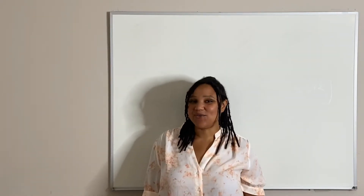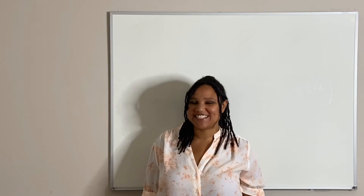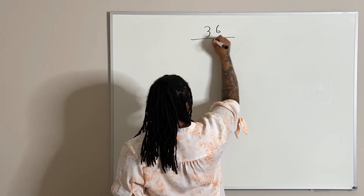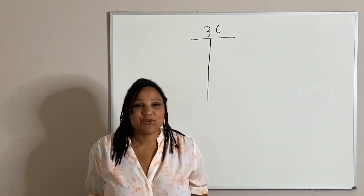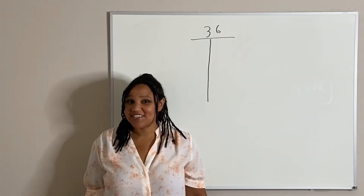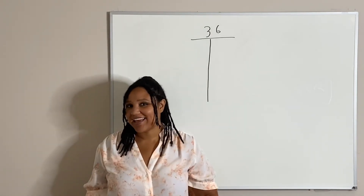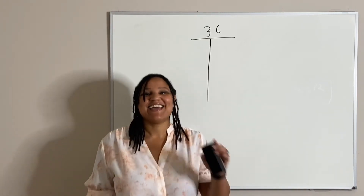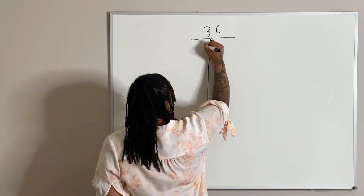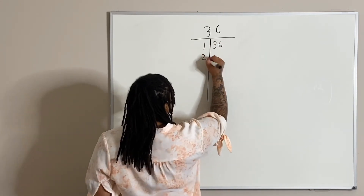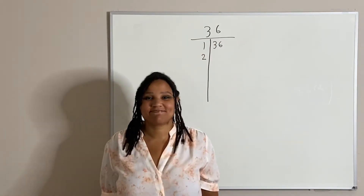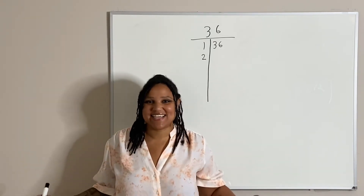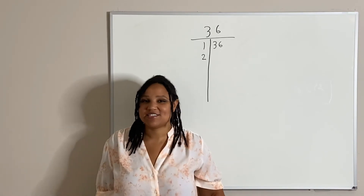Okay, so I'm going to give you the number 36. Can you tell me what the first factor will be? It'll be one and what? You said it correctly — yes, 36. What about the number two? You guys are so amazing. Yes, two and 18 is 36.